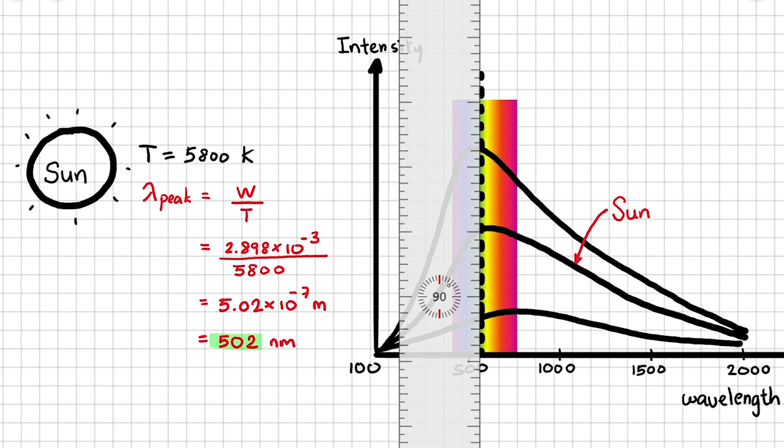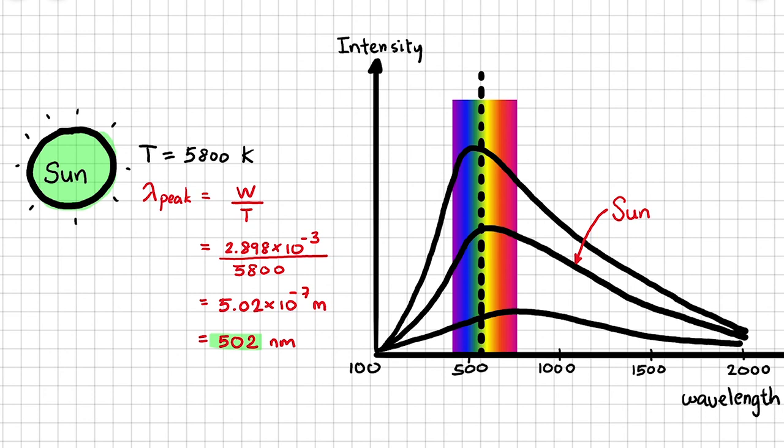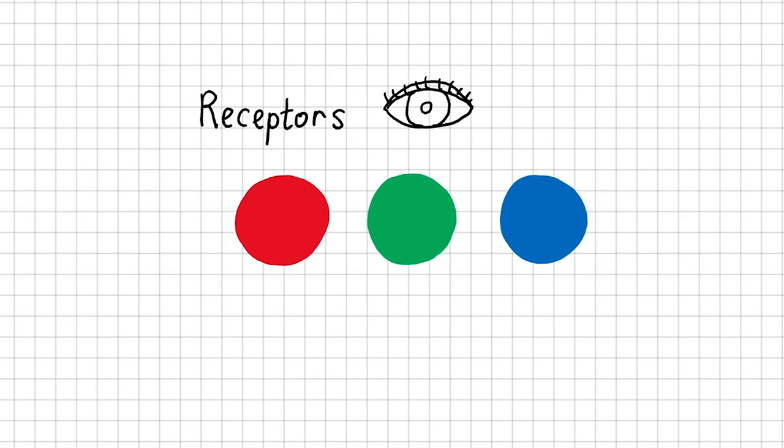But why doesn't it appear green to us? This is more to do with biology than physics. Our eyes have receptors for red, green, and blue colors. Even though the Sun spectrum peaks at green, it also emits in the red and blue regions. Our eyes have not evolved to distinguish the color of highest intensity from colors of lower intensity. Our brain mixes all three colors together, forming white.